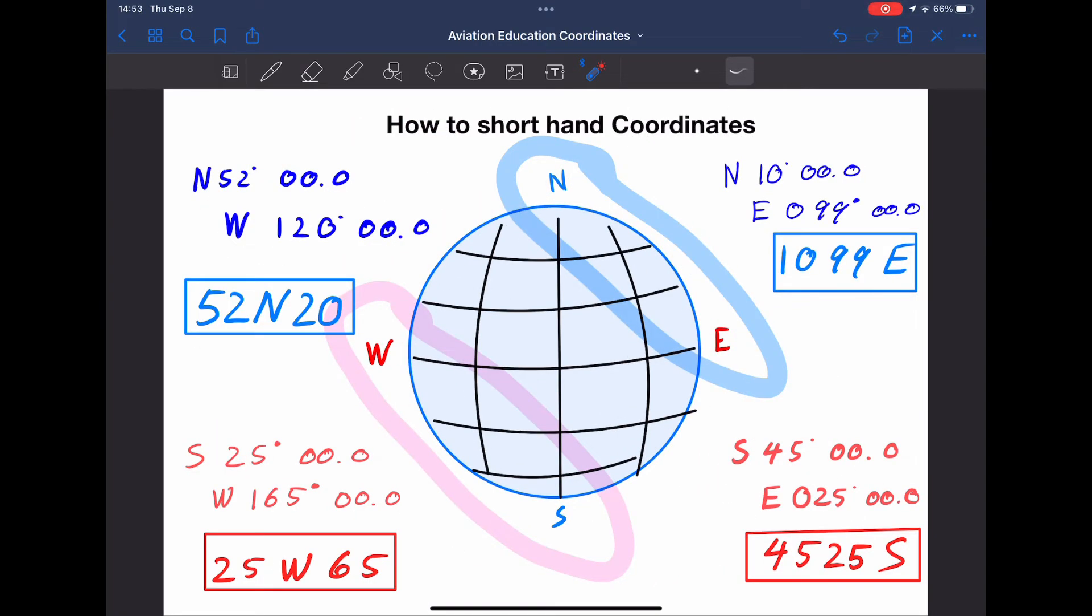Thus far, we've learned how to understand, how to read, how to partially write coordinates, but now we're going to talk about shorthanding coordinates. Shorthanding coordinates is turning the full written-out coordinates into five characters. When shorthanding, the letters that go into the code, in this case north and east, represent that you're in the northern hemisphere. And opposite, the pink circle that I have drawn, west and south, west and south, in the shorthand code, represent that you're in the southern hemisphere.